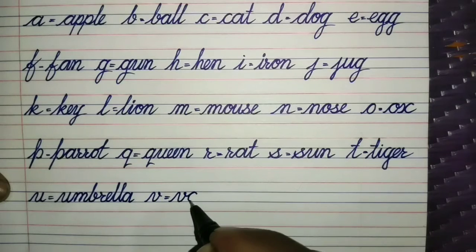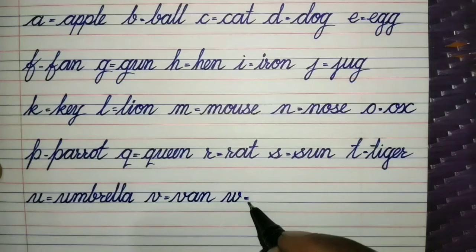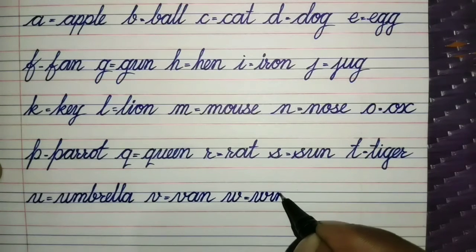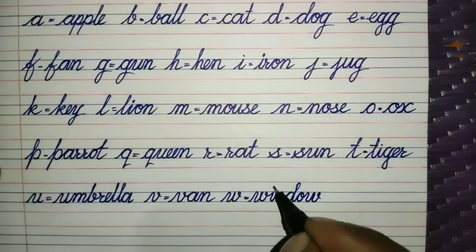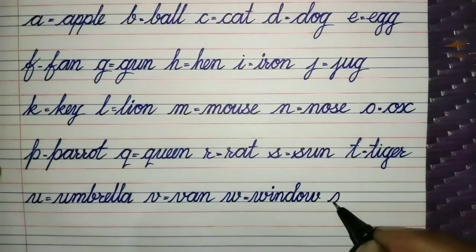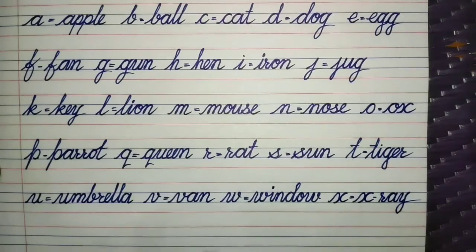V for Van. V, A, N. Van. W for Window. W, I, N, D, O, W. Window. X for X-Ray. X, R, A, Y. X-Ray.